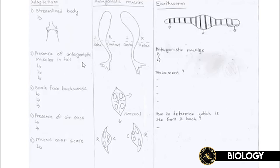Consider this: if human beings had gills, do you think they could survive underwater for a very long time? The answer is actually no. Even with gills, humans wouldn't be able to live underwater for very long — and that's because of the five adaptations a fish has that we're about to cover.